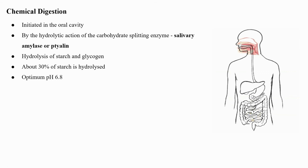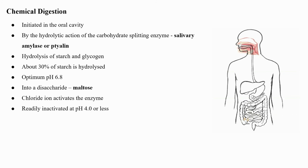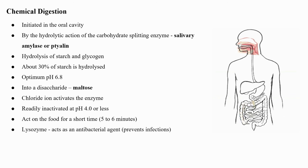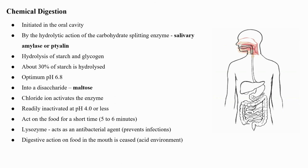Salivary amylase brings about the hydrolysis of starch and glycogen; about 30 percent of starch is hydrolyzed in the mouth at an optimum pH of 6.8 into the disaccharide maltose. Chloride ion activates the enzyme. Salivary amylase is readily inactivated at pH 4.0 or less and can act on food for only five to six minutes. Lysozyme present in saliva acts as an antibacterial agent that prevents infections.